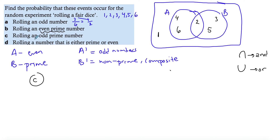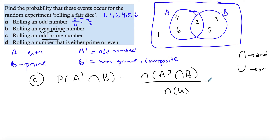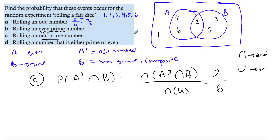For rolling an odd prime number: odd means not A, and it also has to be a prime number, so I'm looking at A prime intersect B, divided by N(U) which is six. Using Venn diagram shading, A prime is everything outside A, and B is the B circle. Where I've shaded twice it's only three and five, so that's two elements. You can verify logically — there are only two odd prime numbers — giving two over six, which simplifies to one over three.